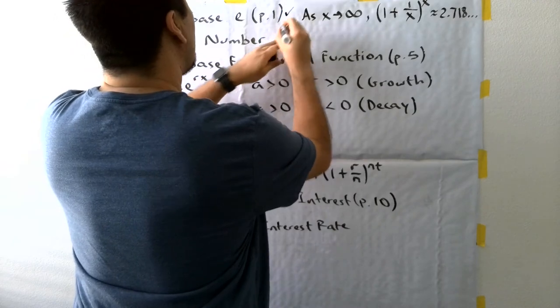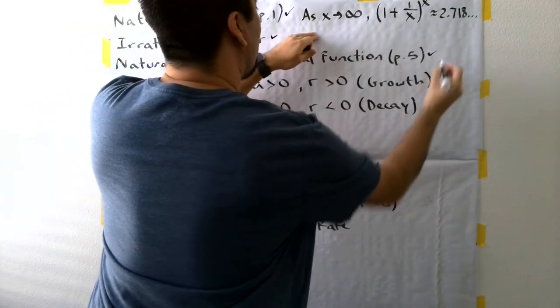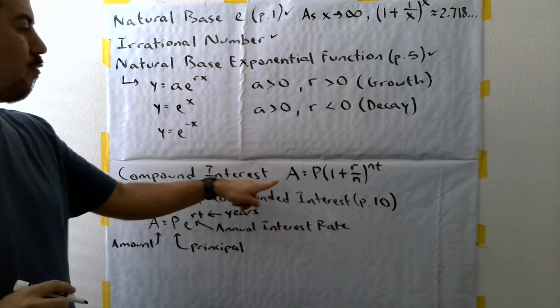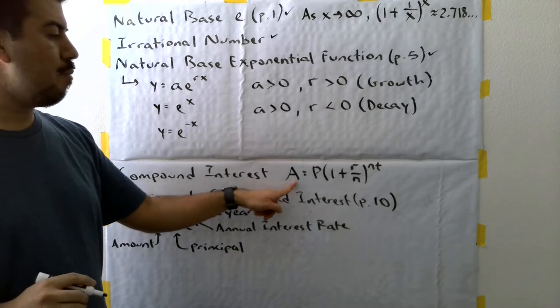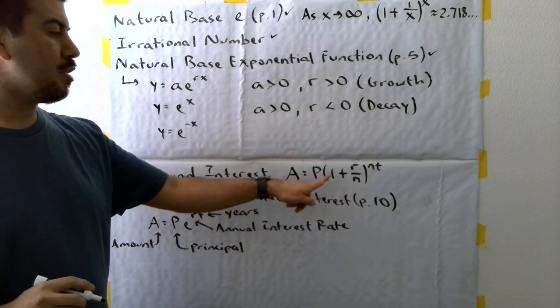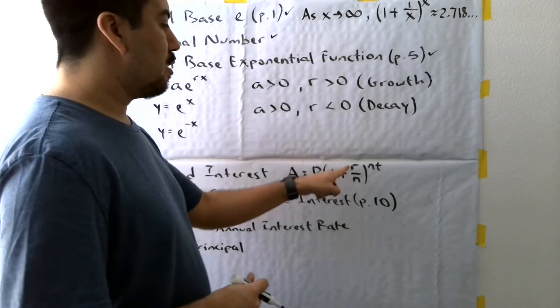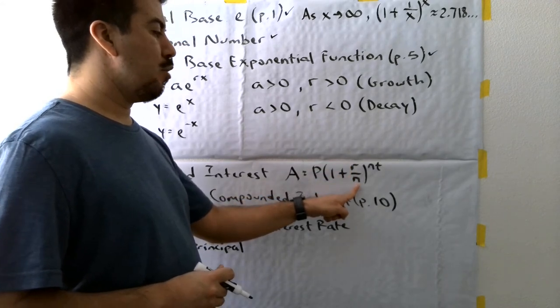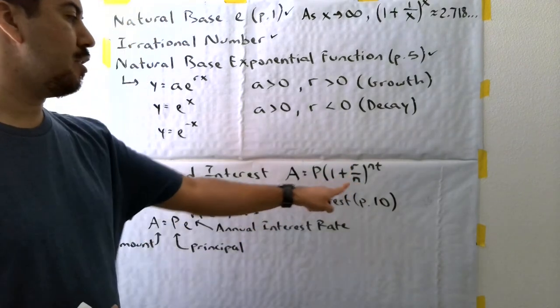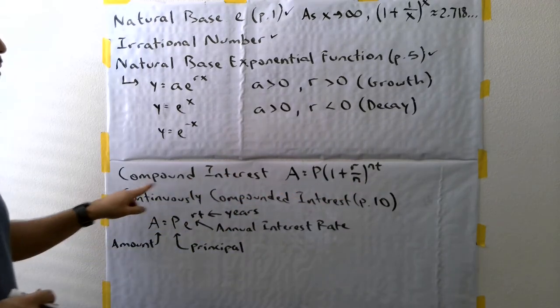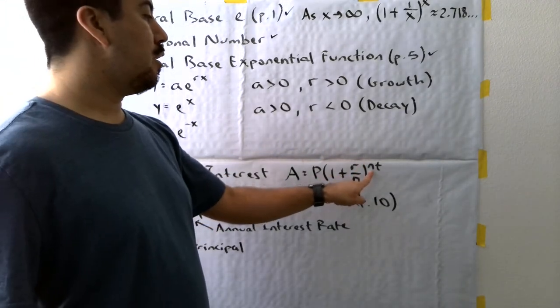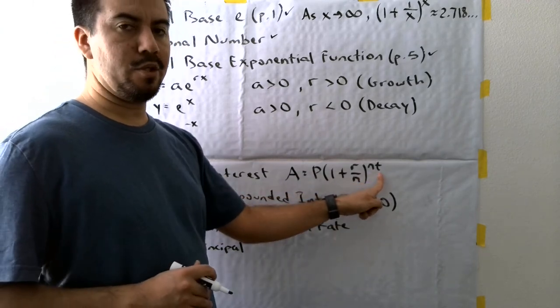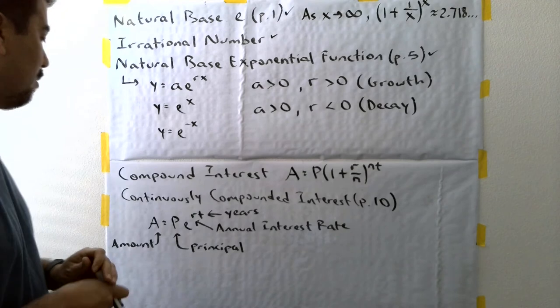Now, for compound interest, we've covered this in a previous section. So you probably are familiar with this. The compound interest formula given by this: the amount is equal to the principal times, in parentheses, one plus the annual rate divided by the number of times the amount is compounded. That's why it's called compound interest. Raised to that same value times T, which is in relation to time, usually years.